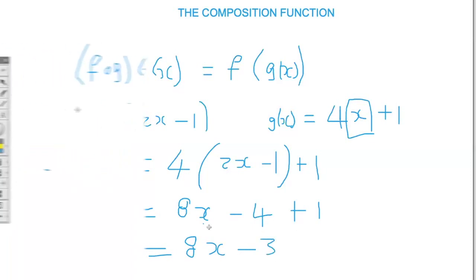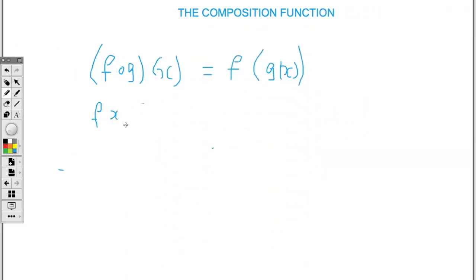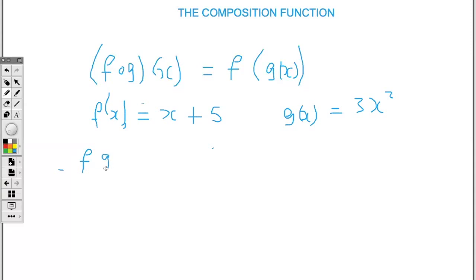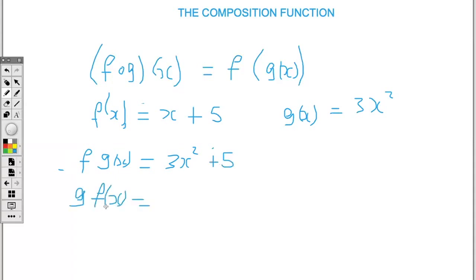We could also have f(x) being x plus 5, and g(x) being 3x squared. So if I want f of g, then what I'm really asking you to do is substitute the function g into the function f. So replacing x with g(x), I'll just have 3x squared plus 5.